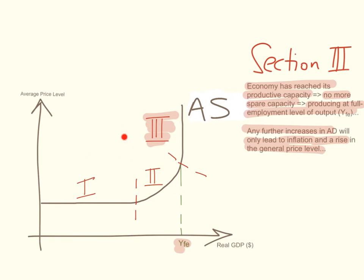So there are three sections in the Keynesian aggregate supply curve depending on the level of spare capacity. They believe that wages and prices can generally rise, but they are downwardly inflexible. Wages and prices are sticky and rarely go down in reality — firms are less likely to lower prices and more likely to fire workers instead of cutting their existing wages, as that might be demotivating for the workers they already have employed.